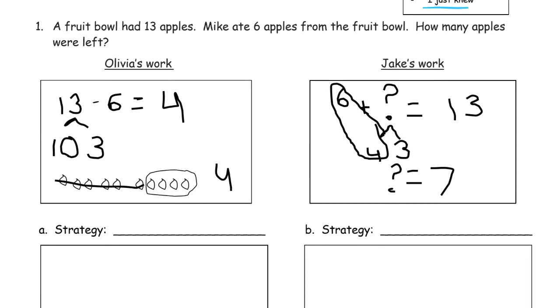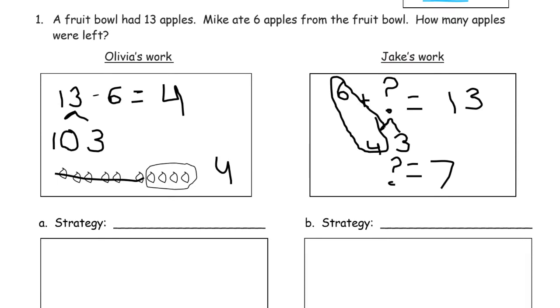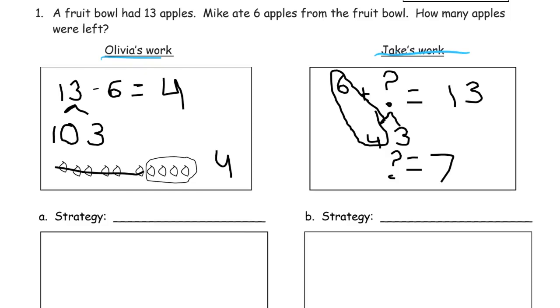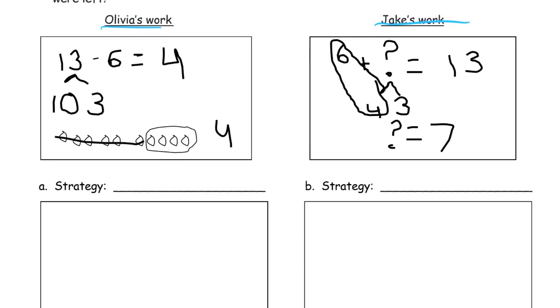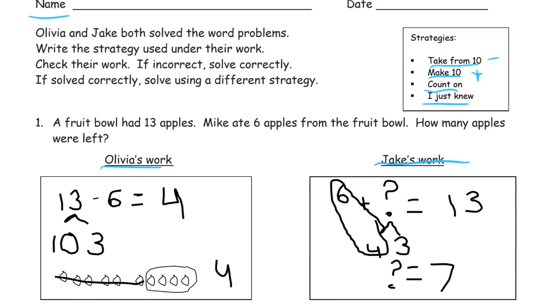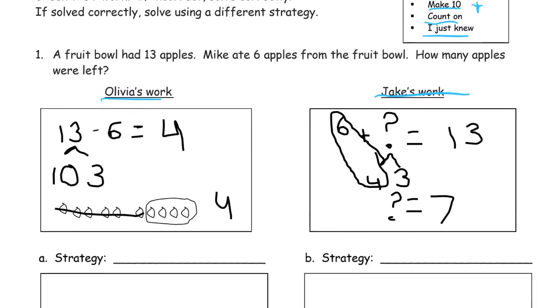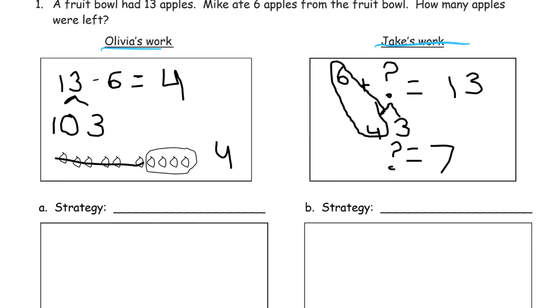A fruit bowl had 13 apples. Mike ate 6 apples from the fruit bowl. How many apples were left? So here's Olivia's work. Here's Jake's work. And we're going to see if they're both right. Alright, so let's see Olivia's work. She had 13 minus 6. And she says it equals 4. Okay, so let's see, the 13 she split up into a 10 and a 3.